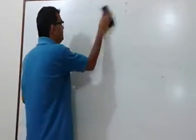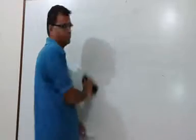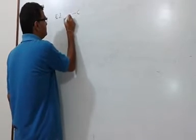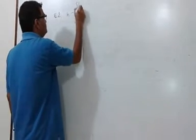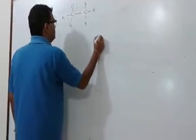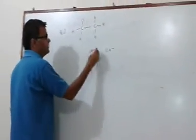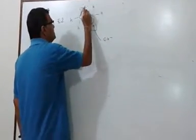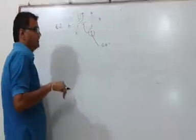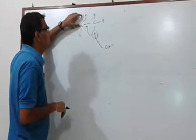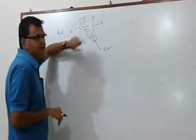Now let us see what we discussed in E2. There was a leaving group. I am writing it for your reference. There was a leaving group. OH- extracted a proton which forced the chlorine to go away. It was possible because it is feasible for breaking of C-Cl bond and formation of C double bond C.